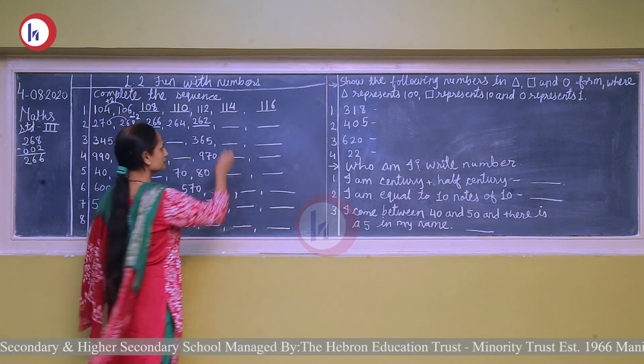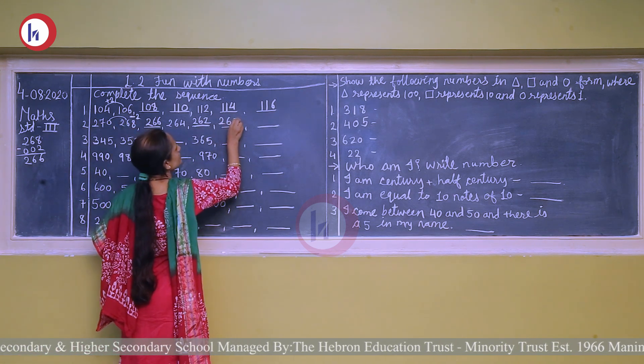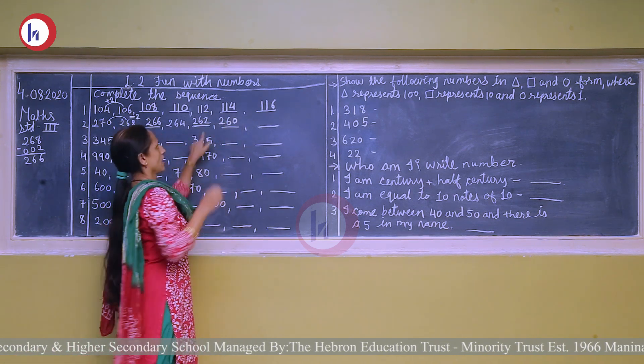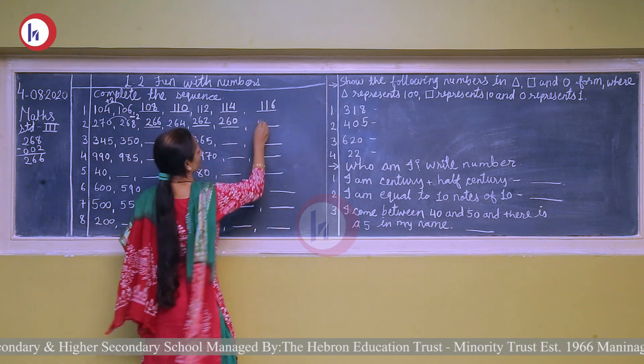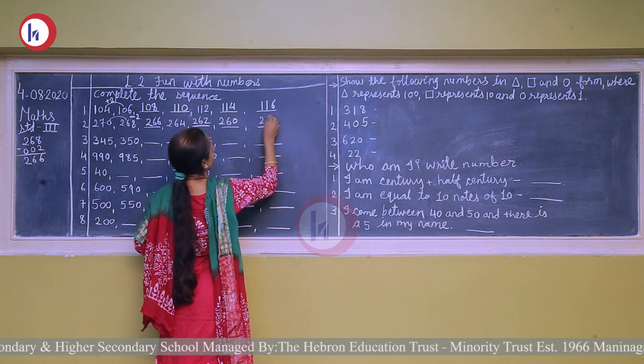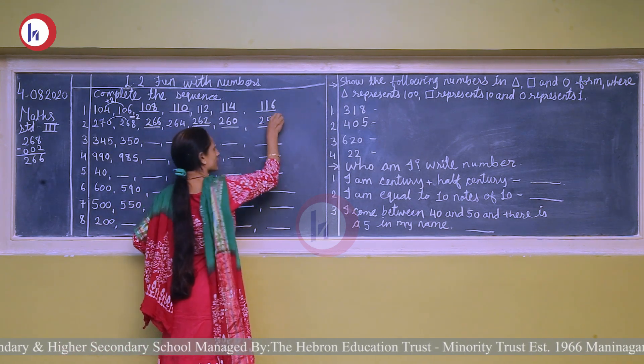Again minus 2 gives 260, and again minus 2 gives 258.